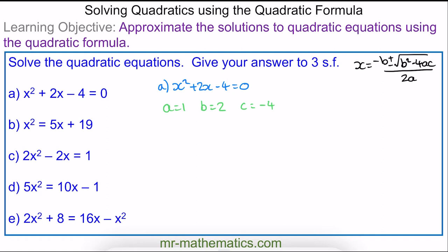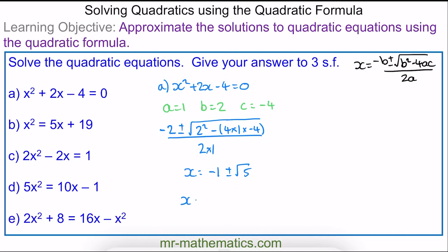Now we substitute these three values into our formula and simplify. So x = −1 ± √5. This gives x ≈ −3.23 and x ≈ 1.24, to three significant figures.